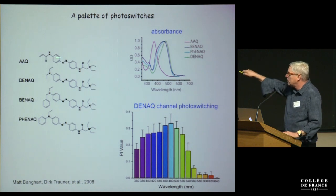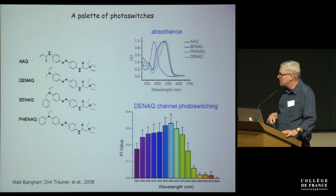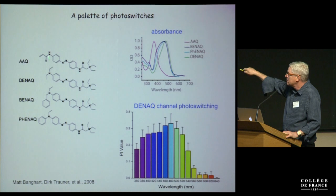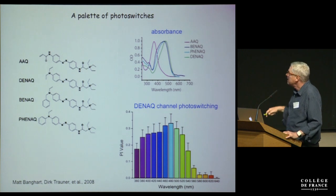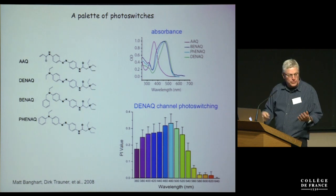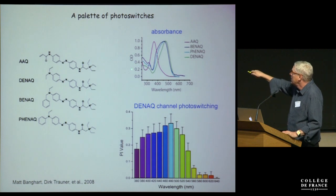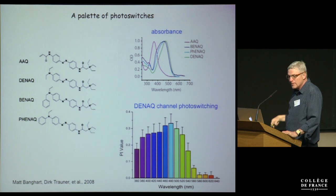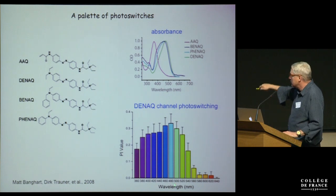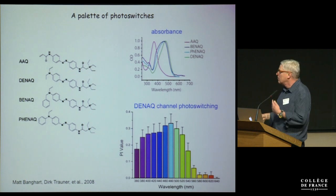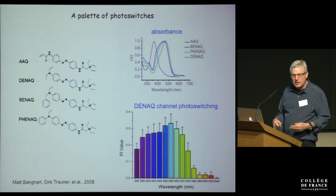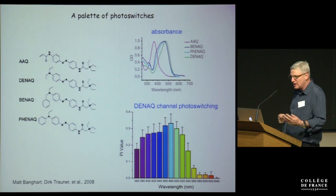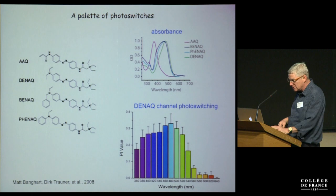We started out with a molecule that required UV light in order to photoisomerize—AAQ—and it worked primarily on potassium channels. But over the years, in collaboration with Dirk Trauner and Matt Banghardt, who was in his lab at the time, we made a variety of derivatives of AAQ that preferred different kinds of voltage-gated channels and are red-shifted in their absorbance, allowing them to work right in the middle of the visible spectrum. These molecules photoisomerize and relax quickly back to their ground state, so they can be switched back and forth. Within milliseconds, they can block and unblock channels with just a single wavelength of light.